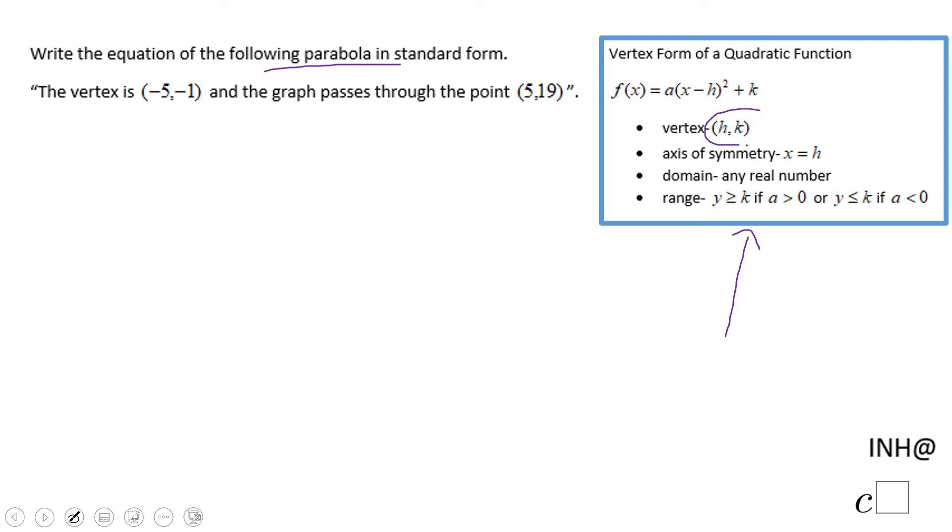If you notice, h and k are the vertex, so in this case h is -5 and k is -1. That means the equation will be f(x) or y equals a times (x minus h), which is (x minus -5), squared plus k, which is plus (-1).